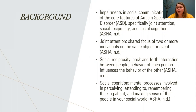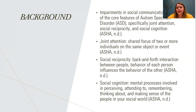Joint attention is that shared focus of two or more individuals on the same object or event — for example, a mom and child both focused on a train toy or looking at something out the window together. Social reciprocity is the back-and-forth interaction between people, where the behavior of one person influences the behavior of the other. And social cognition involves those mental processes of perceiving, attending to, remembering, thinking about, and making sense of the people in your social world.